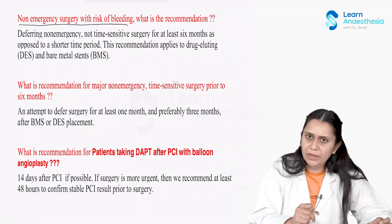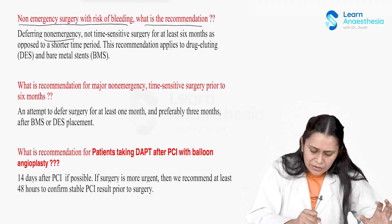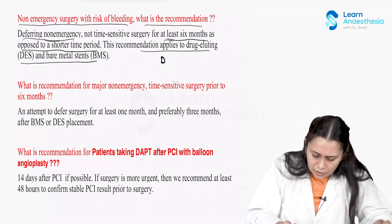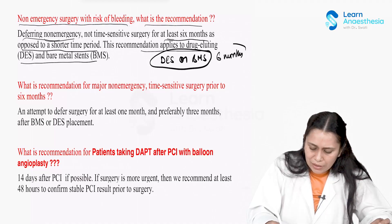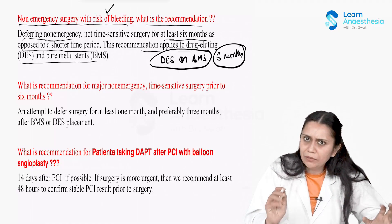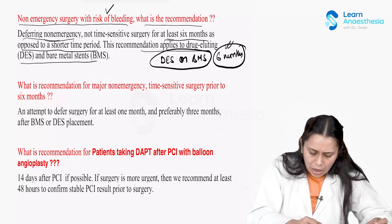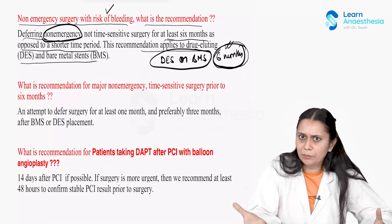For non-emergency surgery with risk of bleeding, the recommendation is to defer the non-emergency surgery for at least six months, as opposed to a shorter time period. This recommendation applies to both drug-eluting and bare metal stents. So if a patient has a drug-eluting or bare metal stent, postpone the surgery for six months before proceeding, because stopping clopidogrel before six months increases the risk of stent thrombosis.